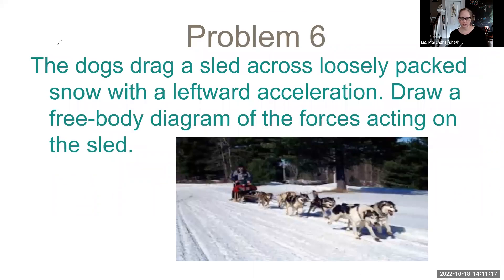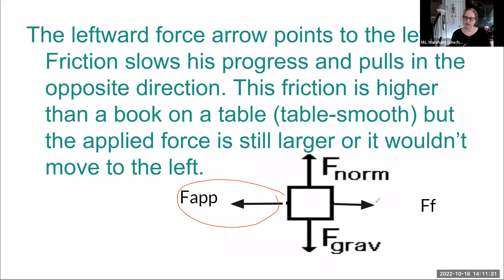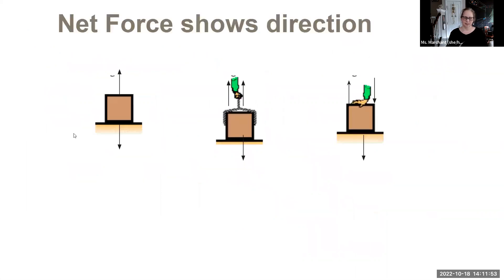The dogs drag a sled across loosely packed snow with a leftward acceleration. So the force applied has to be going to the left. The force of friction is really big — why? It's snow. So it's going to slow them down, but we're still getting an acceleration to the left, so our net force is still going to the left. Gravity and normal again balance each other out.